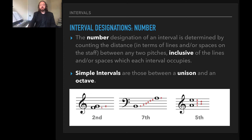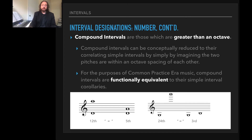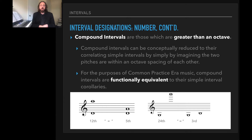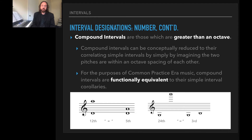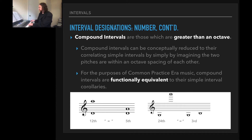When we encounter intervals that are greater than that, those are going to be known as compound intervals — intervals between two notes which are greater than an octave. Compound intervals can be conceptually reduced to their correlating simple interval by simply imagining the two pitches are within an octave spacing of each other.